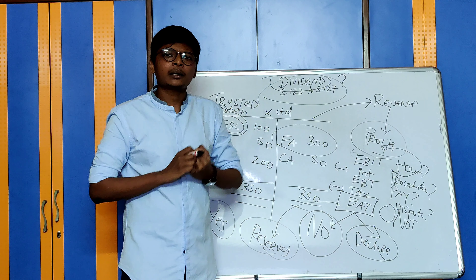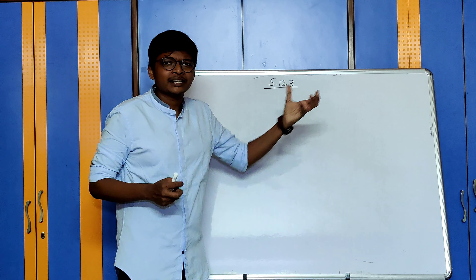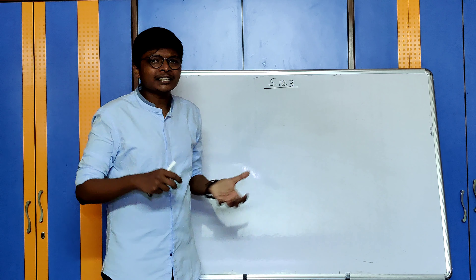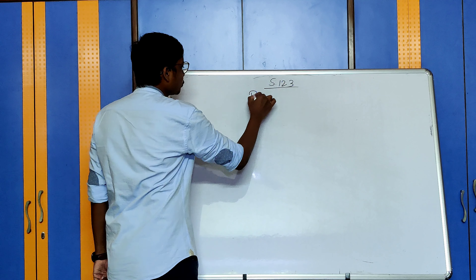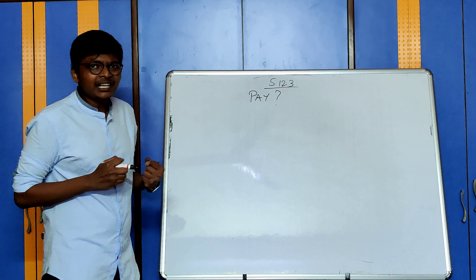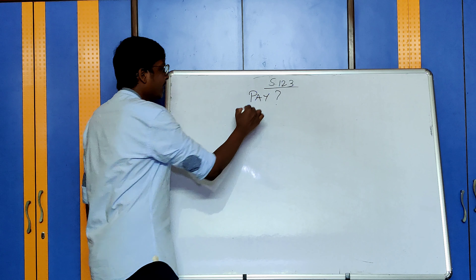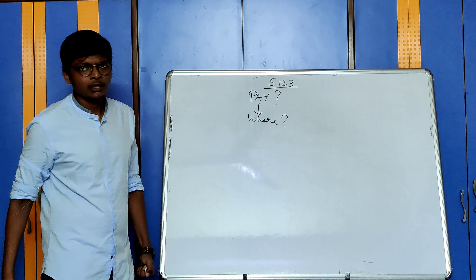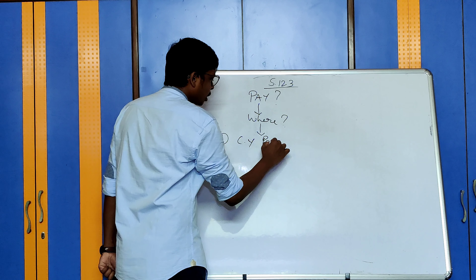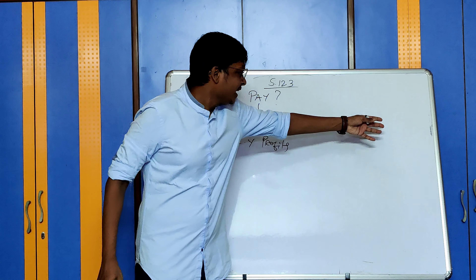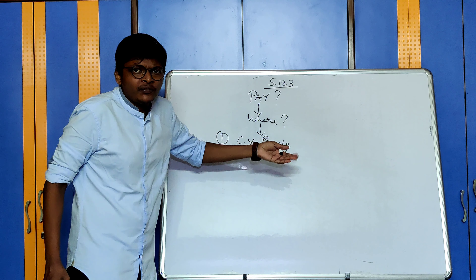Let us proceed to understand the provisions of the Companies Act. Now let us proceed to Section 123, which is the biggest section in the dividend chapter. What is Section 123 saying? If a company wants to pay the dividend, what are the conditions or prerequisites that are essential? First, if the company wants to pay the dividend, from where can it pay? The provision says: from current year profits. If the company is not going to earn money, can they pay dividend? No. Therefore, from current year profits they will pay the dividend.